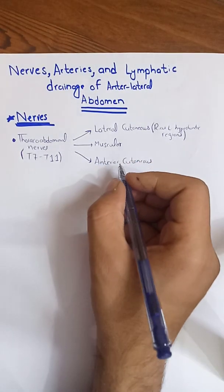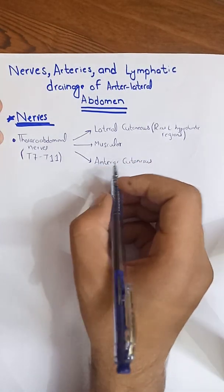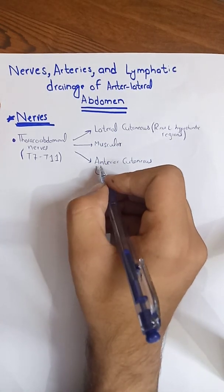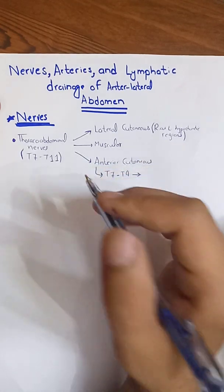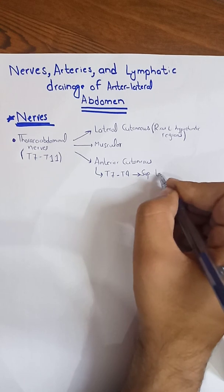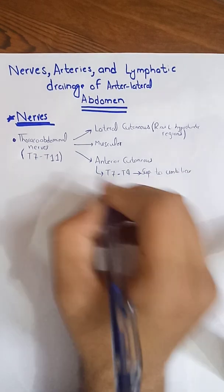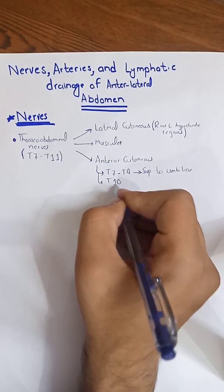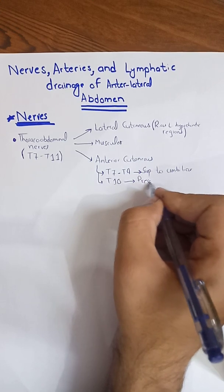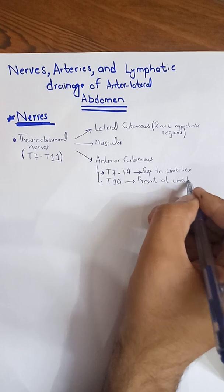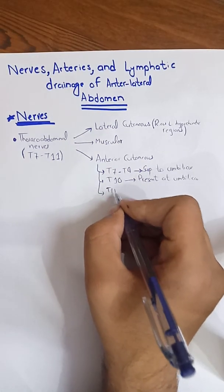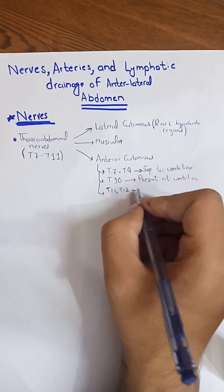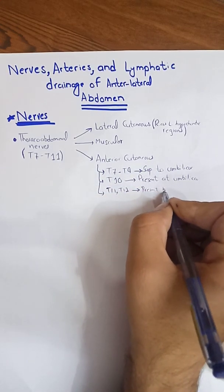The anterior cutaneous branch arises at the parasternal line. In terms of specific regions: fibers from T7 to T9 supply the skin superior to the umbilicus; T10 supplies the skin at the level of the umbilicus; and T11 and T12, which corresponds to the subcostal nerve, supply the skin below the umbilicus.